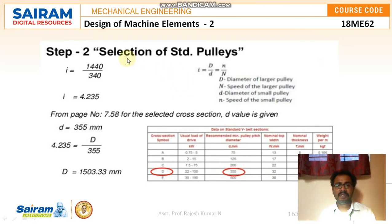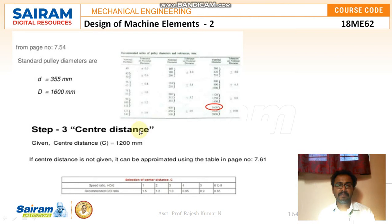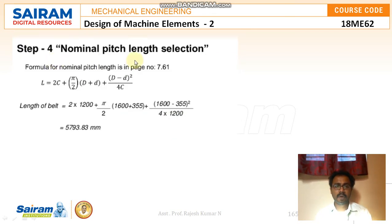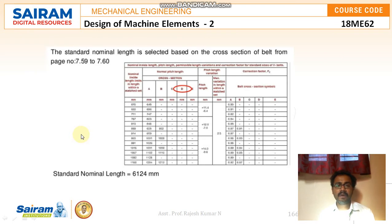Step 2: Selection of standard pulleys. Using i = D/d, the transmission ratio i = 1440/340 = 4.235. From the table for D cross-section, the small pulley diameter d = 355 mm. Therefore, D = 4.235 × 355 = 1503.33 mm. Step 3: Center distance is given as 1200 mm, so no calculation needed. Step 4: Nominal pitch length. Using L = 2C + (π/2)(D + d) + (D − d)² / 4C, substituting all values gives L = 5793.83 mm.